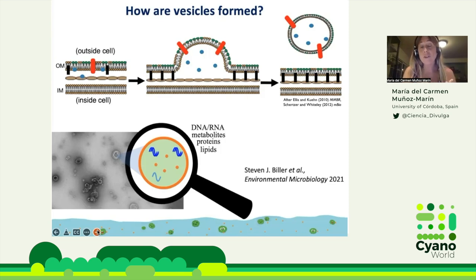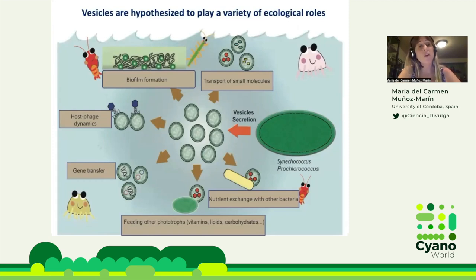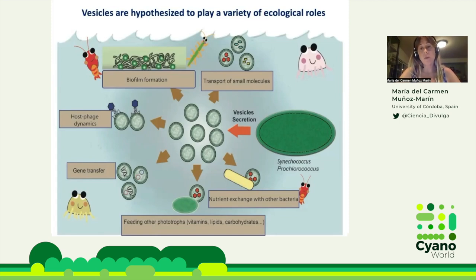Some gram-positive bacteria like Streptococcus have protein machinery that moves nucleic acids inside vesicles. Vesicles are hypothesized to play a variety of ecological roles in other bacteria, like biofilm formation, transport of small molecules, nutrient exchange with other bacteria, feeding other phototrophs with vitamins, lipids, carbohydrates, gene transfer, and even host-phage dynamics. But in Prochlorococcus and Synechococcus, the exact roles of these vesicles are still unknown. Vesicles in Synechococcus were only observed in one axenic culture by Steve Beeler, so there are no experiments carried out yet.